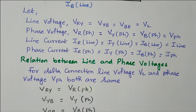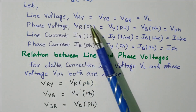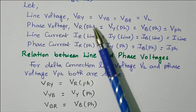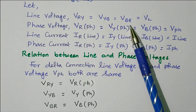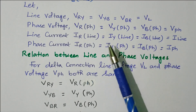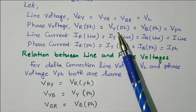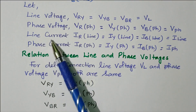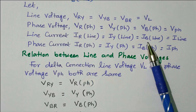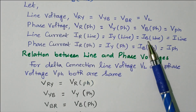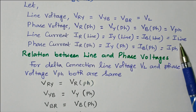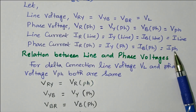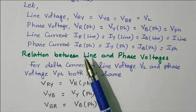So based on that, we can go for further relations. Let line voltage VRY = VYB = VBR = VL. This is a balanced system, so the voltage across the phases are equal, taken as VL. Similarly, phase voltage VR phase = VY phase = VB phase = V phase. Line current IR line = IY line = IB line = IL. Phase current IR phase = IY phase = IB phase = I phase. Because of the balanced system, line voltage is VL, phase voltage is VPH, line current is IL, and phase current is IPH.